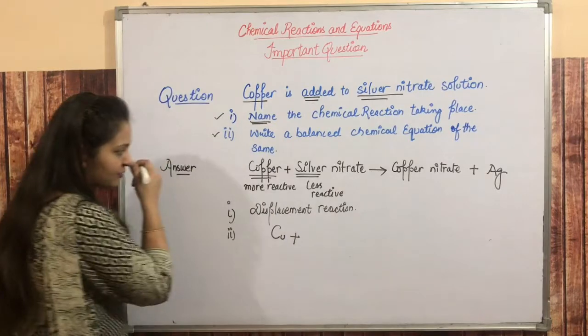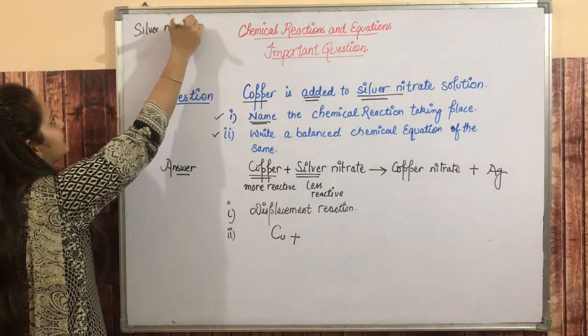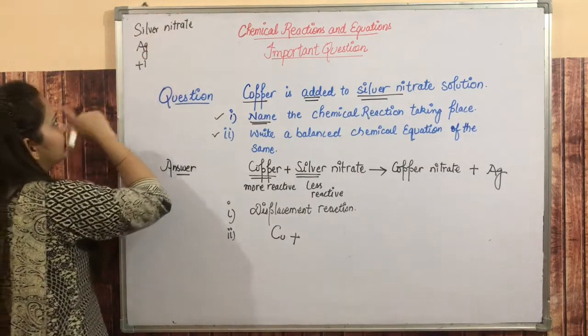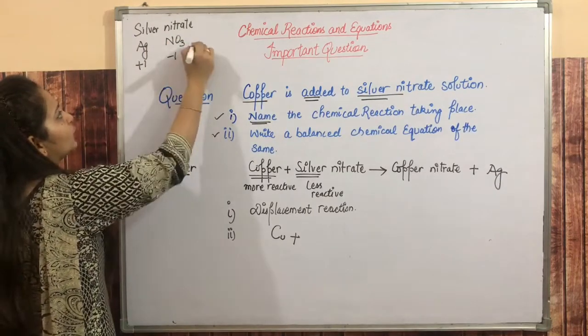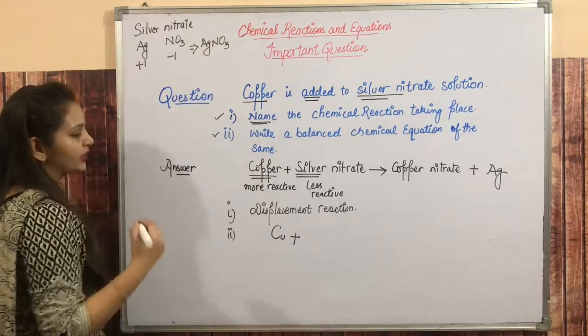Copper. Silver nitrate: silver is Ag, charge plus one. Nitrate is NO3 minus one. So what will be the formula? AgNO3. So Cu reacts with AgNO3.